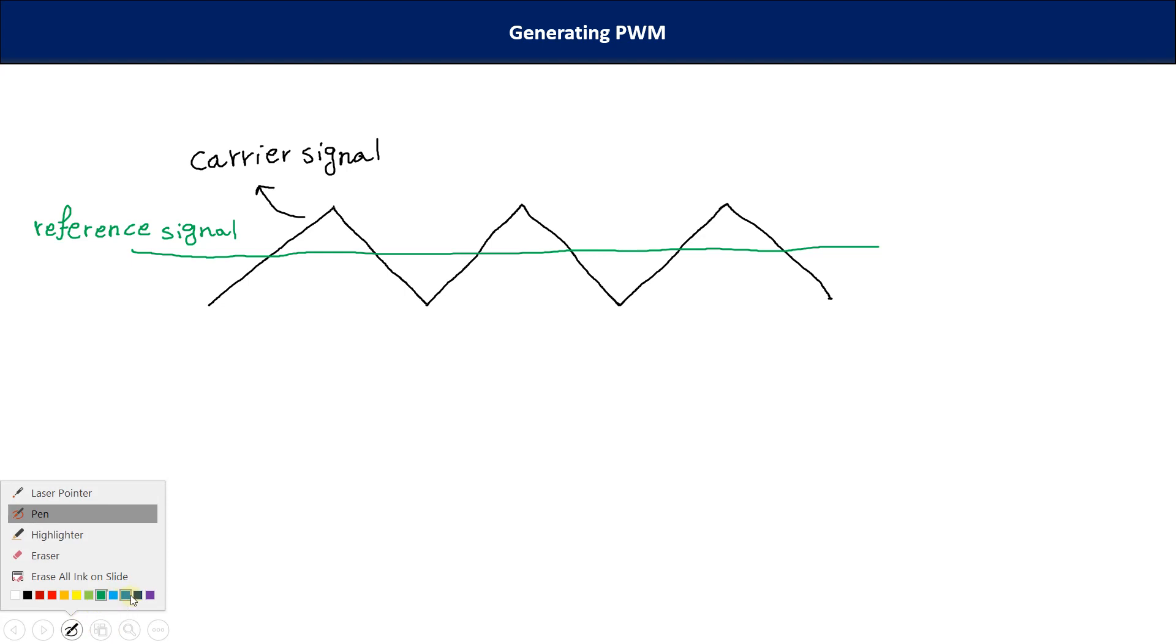The process in which the PWM signal is generated is nothing but comparing. Let me explain how we can do it. This is a point and this is another point. And again, our carrier signal is up. So, we've got our signal on. Better to say our MOSFET or our IGBT is on.